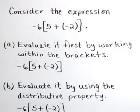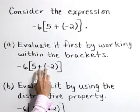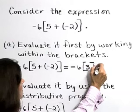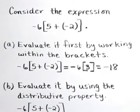In part A, let's evaluate it first by working within the brackets. To work inside the brackets, let's add 5 plus negative 2, which gives 3, and negative 6 times 3 is negative 18.